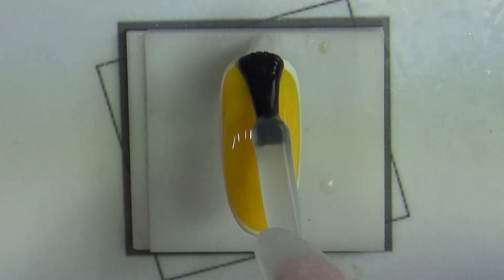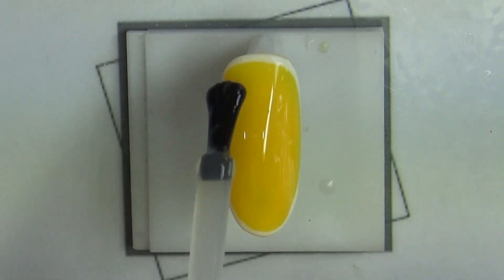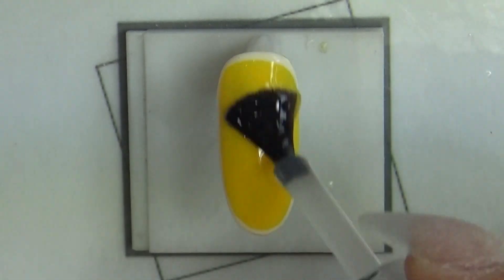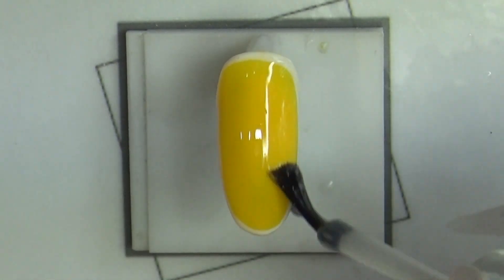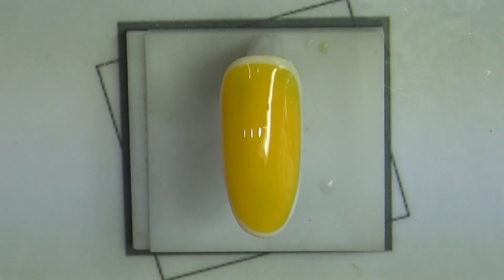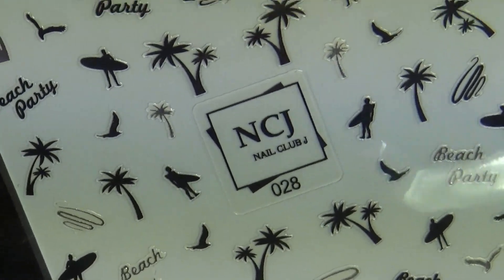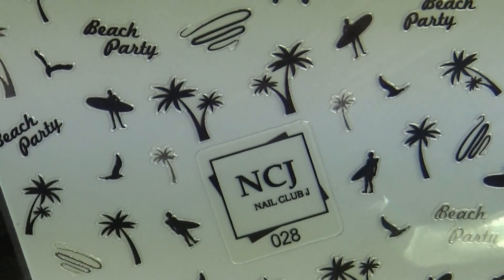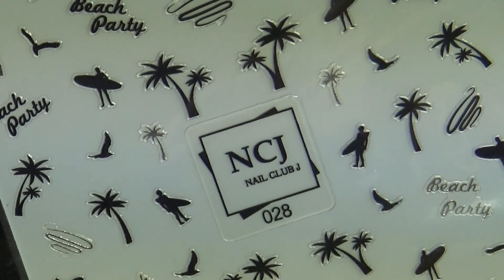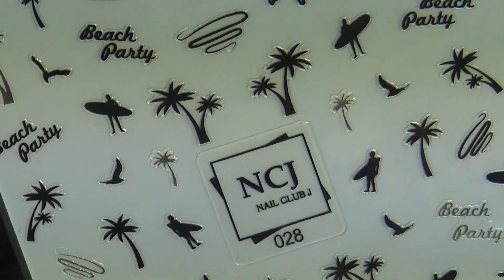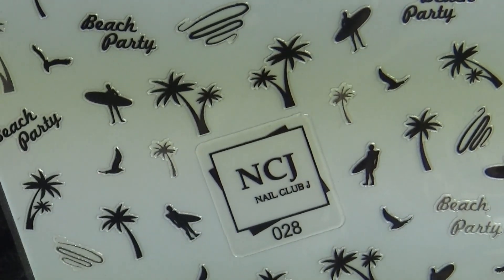다음으로 NCJ 탑 젤을 전체적으로 발라서 기본 배경 디자인은 마무리 해주시고요. 30초 큐어 들어갈게요. 다음으로 사용할 제품은 28번 여름 느낌이 물씬 나는 스티커인데요. 저는 여기서 야자수 모양의 스티커를 사용을 할게요.